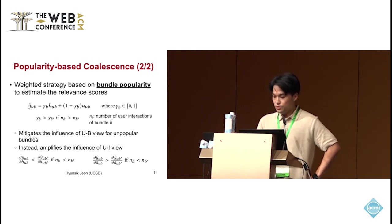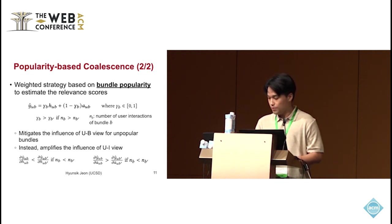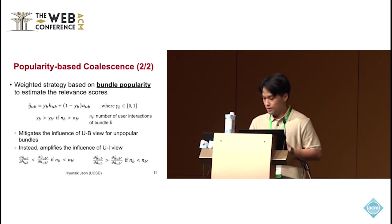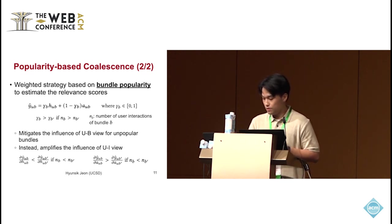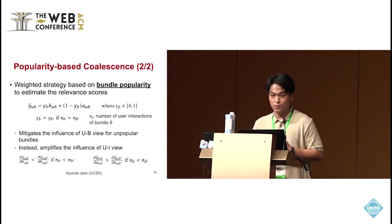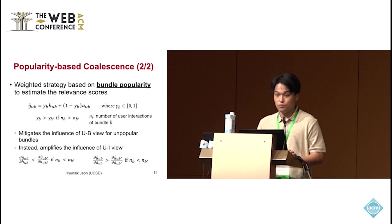Specifically, we use a weighted strategy to combine the relevance scores from both the user-bundle and user-item views. For popular bundles, the user-bundle view is more reliable and thus given more weight. For less popular bundles, we rely more on the user-item view. This weighted combination helps to mitigate the influence of the user-bundle view's sparsity, while amplifying the richer information available from the user-item view.